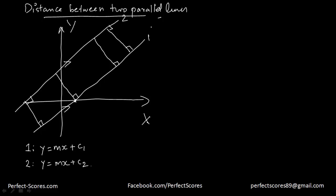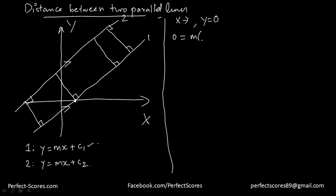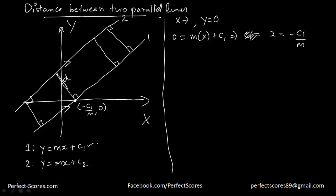Now, this point on line one is actually the x-intercept of this line — that is the value of x when y = 0. Substituting y = 0 gives us 0 = mx + c1, which means the value of x is equal to negative c1 over m. So this point has coordinates (−c1/m, 0). We're interested in finding the distance d from this point to line two.